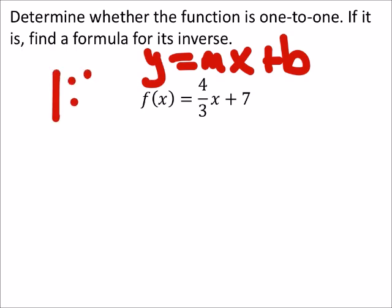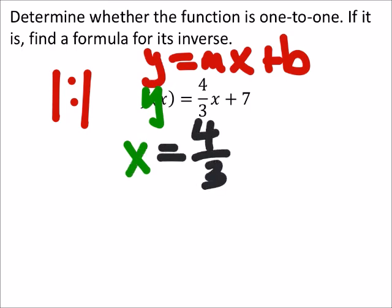So this one is 1 to 1, so we just need to find the inverse, right? So this would have been a y right here. To find the inverse, I'm going to exchange those just directly. So it's just x equals 4 thirds y now plus 7. See what we did there?